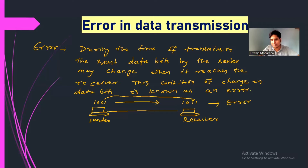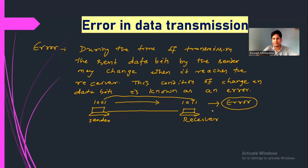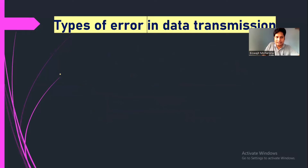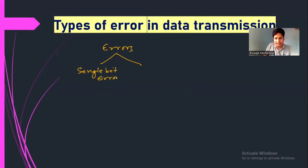1001 was sent, 1011 is received, so one bit has been changed — this is an error. The receiver received data that was not exactly the same as what was sent by the sender. So this will create an error. Now let's see how many different types of errors there are in data transmission.